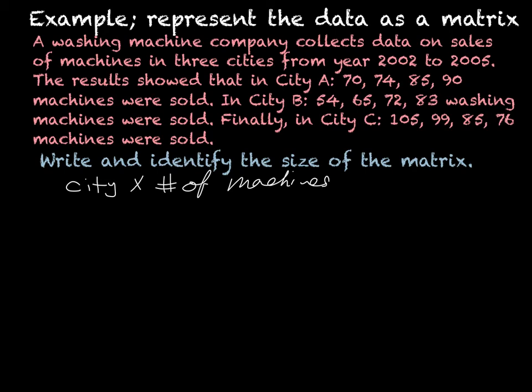If we do that, then that means the rows are going to be the cities, so that would be city A, city B, and city C. And then the columns are going to be the number of machines sold in each year. So this would be 2002, 2003, 2004, and 2005.